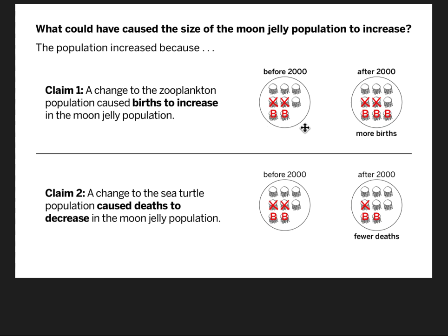That's shown here. Remember, there was a graph — before 2000, we would have had the same number of jellyfish deaths as births: two were born. Because the population died and gave birth at about the same rate, the population was steady before 2000. After 2000, it shows the population had about two deaths for every three births, meaning many more births than deaths. So that causes the population to increase. That was Claim 1 — the zooplankton population was why we see this change.